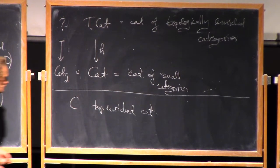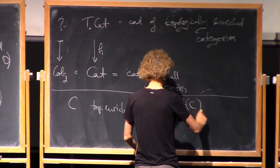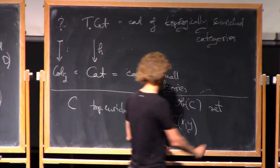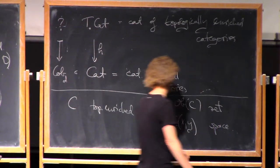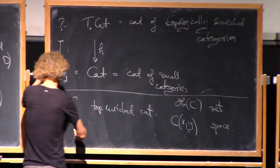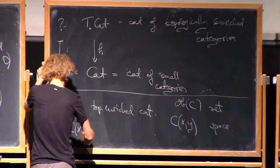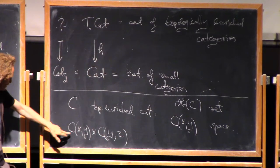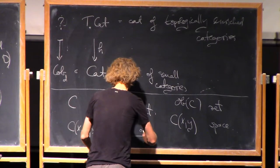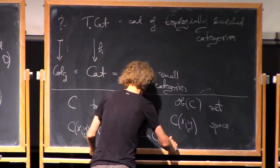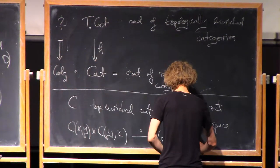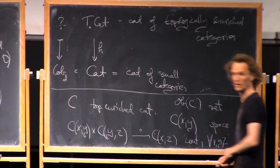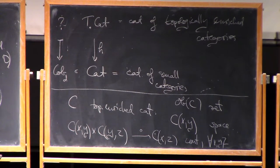So it still has only a set of objects. But for every pair of objects, there's a space of morphisms. And the only, well, the obvious condition, composition, C(X,Y) times C(Y,Z) I compose, I get into C(X,Z). This should be continuous for all X, Y, and Z in the set of objects where the source is given the product topology.